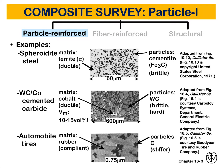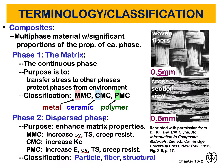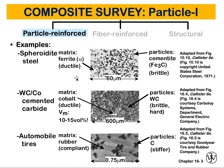In the image in front of you, we are showing three different types of particle reinforced composites. The first is spheroidite steel, where the matrix phase is ferrite and the dispersed particulate is cemented Fe₃C, which is brittle. So we have a ductile material — ferrite — combined with a brittle ceramic-like material to strengthen it. The matrix phase is ferrite and the dispersed phase is Fe₃C.